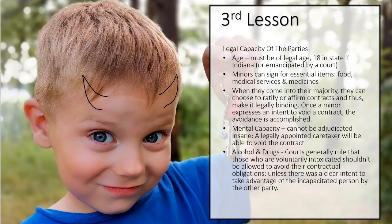A person's capacity to contract — the very first thing we talk about is the age of 18. That is the majority age in all states; that is the age required for an adult to become competent enough to sign a contract. Anybody under the age of 18 is referred to legally as an infant — so even 14, 15, 16-year-olds. They can also be legally emancipated by a court, which would give them the age of majority if they were, like, 17.